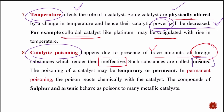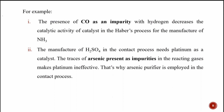The poisoning of a catalyst may be temporary or permanent. In permanent poisoning, the poison reacts chemically with the catalyst. Compounds of sulfur and arsenic behave as poisons to many metallic catalysts. For example, the presence of carbon monoxide as an impurity with hydrogen decreases the catalytic activity of the iron catalyst used in the Haber process for the manufacture of ammonia.